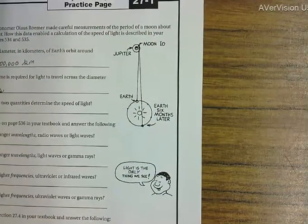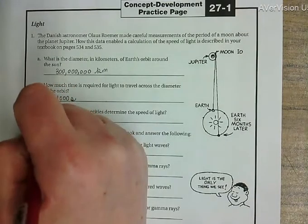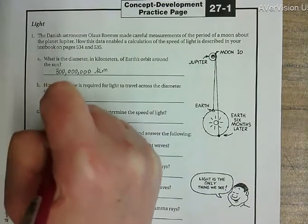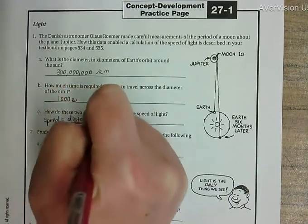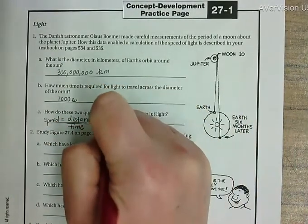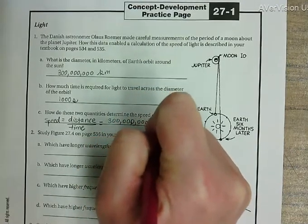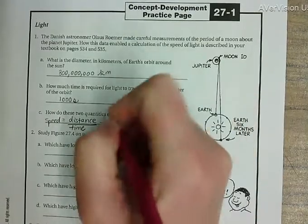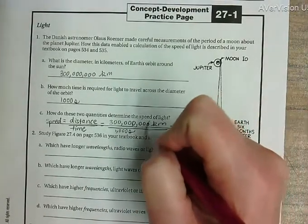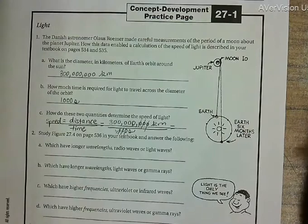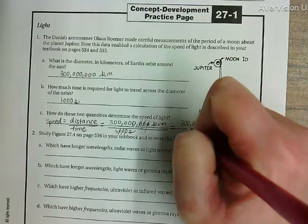How do these two quantities determine the speed of light? We know that speed equals distance divided by time. The distance is 300,000 kilometers and the time is 1,000 seconds. The three zeros cancel out, and we get a speed of 300,000 kilometers per second.